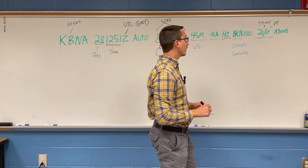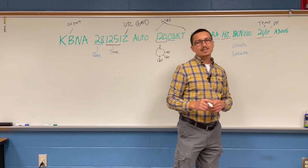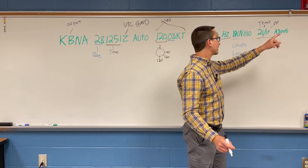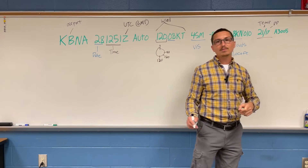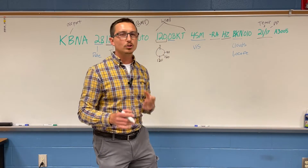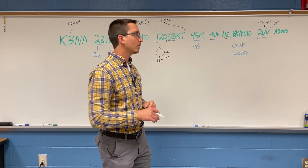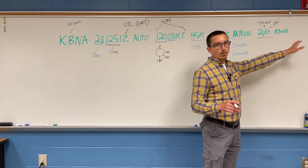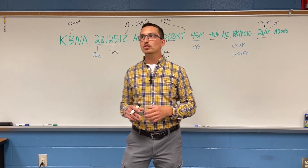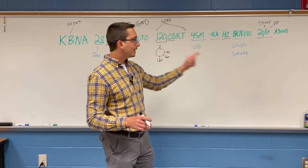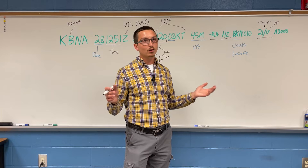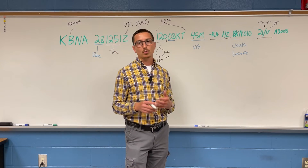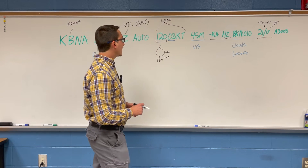The next section is atmospheric pressure. Here it reads A3005, meaning 30.05 inches of mercury (Hg) — a little above standard day atmospheric pressure, which I'll cover when I talk more about weather. After that are the remarks section. I didn't see any test questions on the pressure or remarks; the remarks are typically instructions for manned aircraft anyway.